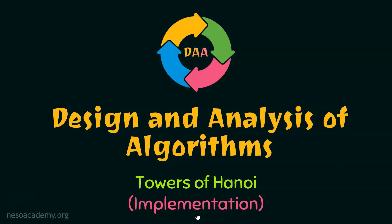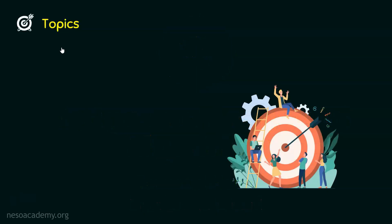In our previous lecture, we understood the recursive algorithm of Towers of Hanoi. We know the recursive algorithm is capable enough to solve the problem of Towers of Hanoi, that is to transfer the disks from one peg to the other. Now in this presentation, we will implement that algorithm and consider a simple example to properly understand how it works. There is only one topic of this lecture: Towers of Hanoi implementation.